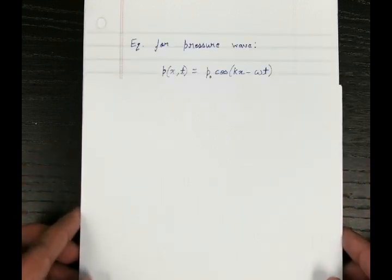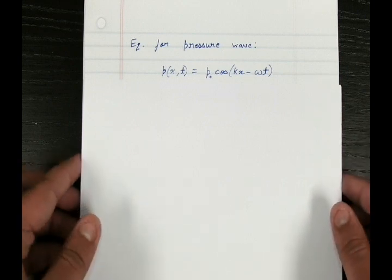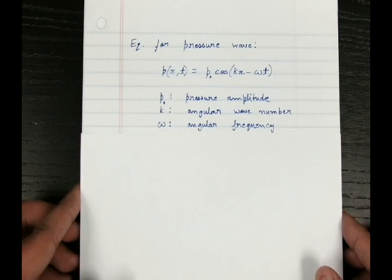Let us take the equation of the pressure wave. So it's given as p equal to p0 cos kx minus omega t. Here p0 is the pressure amplitude, k is the angular wave number, omega is the angular frequency.